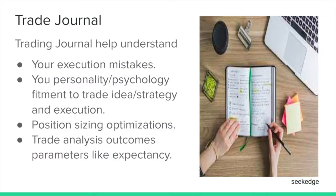The trading journal helps you understand execution errors. For example, what was the initial stop loss? Did you trade as per the rule? Did you exit early? Was there any slippage? The psychology fitment to trade a particular set of rules, and the flaws that happen in execution, are critical. Position sizing optimization is also another need for the journal — you cannot optimize if you don't have a journal.